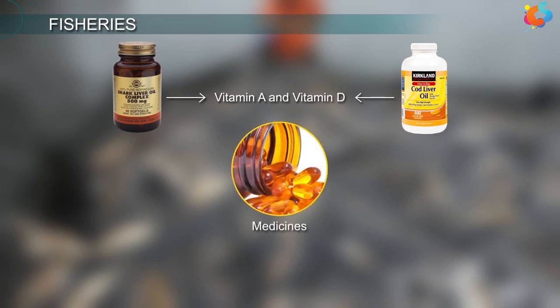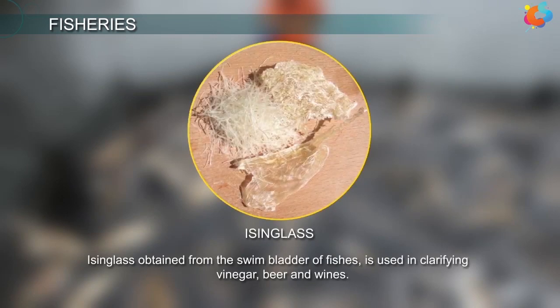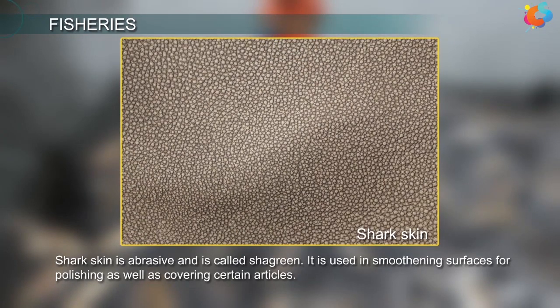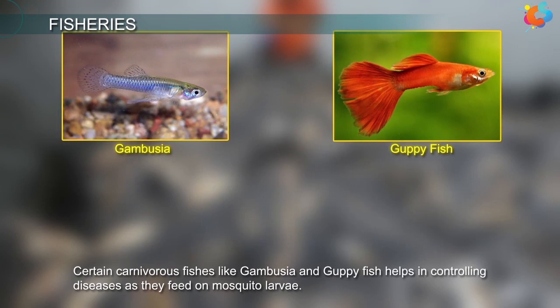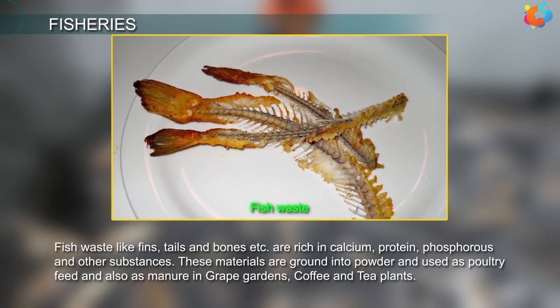Fish liver oils like shark liver oil and cod liver oil are good sources of vitamins A and D and are used in medicines. Oils derived from other parts of fish body are used in paints and soaps. Isinglass, obtained from the swim bladder of fishes, is used in clarifying vinegar, beer and wines. Shark skin is abrasive and is called shagreen; it is used in smoothening surfaces for polishing and covering certain articles. Certain carnivorous fishes like Gambusia and guppy fish help in controlling diseases as they feed on mosquito larvae. Fish waste like fins, tails and bones are rich in calcium, protein, phosphorus and other substances. These materials are ground into powder and used as poultry feed and also as manure in grape gardens, coffee and tea plants.